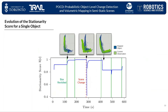To see our Bayesian model in action, we look at the evolution of the state distribution of a single box in the scene. Before the scene changes, the measurements are consistent with the mapped object, so the stationarity score converges to one after just two visits of the box. Once the box moves, the robot detects a significant mismatch, which causes the box's stationarity score to drop below a threshold, and it is then erased and reconstructed at its new location.